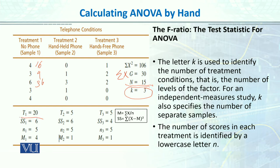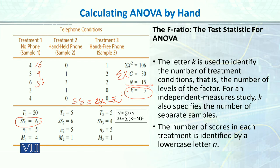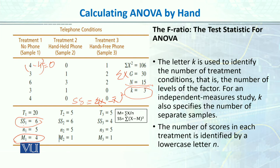Now we calculate SS (sum of squares). The formula is: SS equals summation of (X minus mean) squared. You divide by n to get the mean. For example, if the mean is 4, then (4 minus 4) equals 0. SS for group 1 is 6, SS for group 2 is 6, and SS for group 3 is 4.